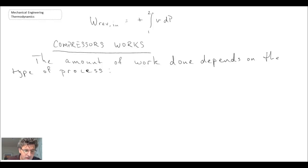So what we're going to do is look at three different types of compression processes, and we're going to look at this on a PV diagram. And part of the compression process, we're going to be going from a lower pressure, P1, up to a higher pressure, P2. And we'll start at the original state down here, state one.